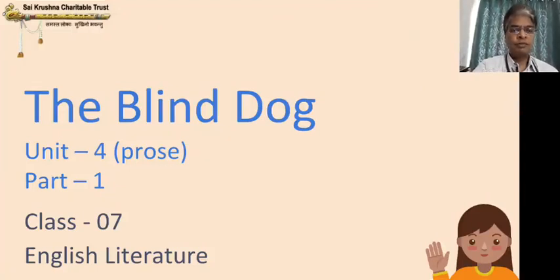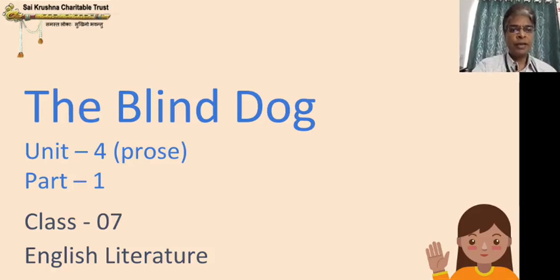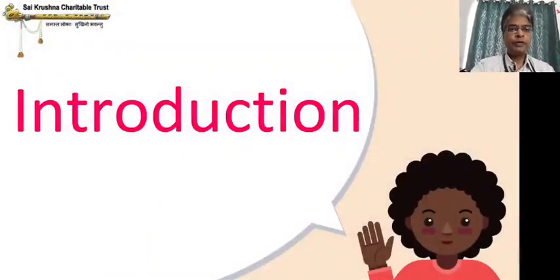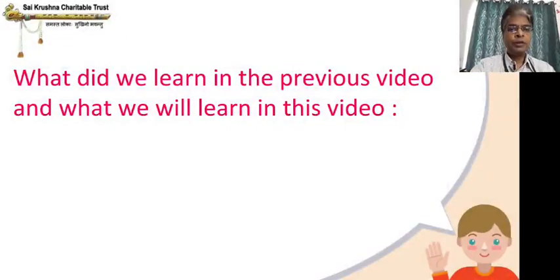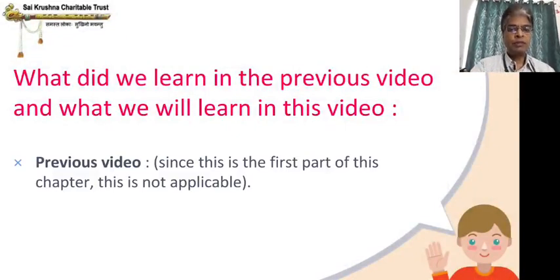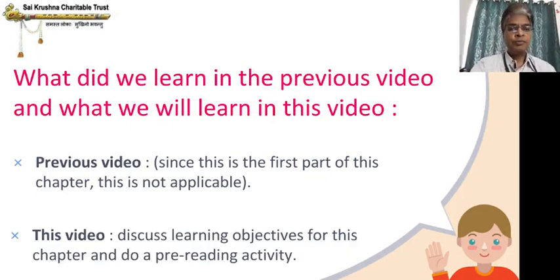Good morning students. Welcome back to English Literature class. My dear 7th standard students, we are going to start a new chapter today. This is Unit 4 Prose and the name of the chapter is The Blind Dog. We will start with part 1 and move forward. This is an introduction to this chapter. In this video, we are going to discuss learning objectives for this chapter and do a pre-reading activity.